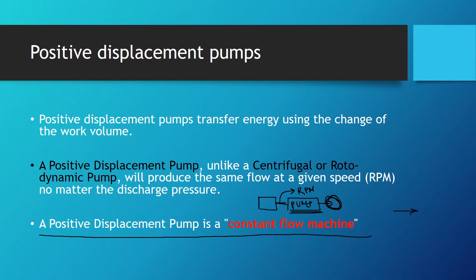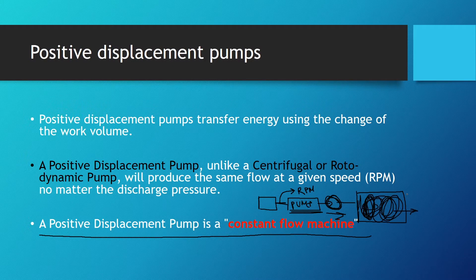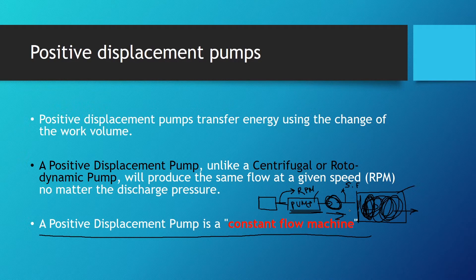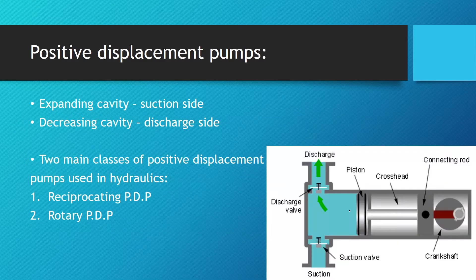If a pump is connected to a tank, it's just going to generate flow until the pressure rises and the tank bursts or the pump malfunctions. That's why we always need a safety valve after a positive displacement pump, as shown in the picture.